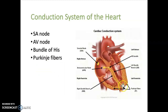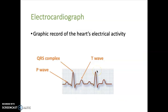The conduction system of the heart involves several structures that set the heart rate and carry the electrical signal from the atria down through the ventricles. Whenever you have an electrical signal, that causes a contraction of the heart. When you look at an electrocardiograph — a graphic record of the heart's electrical activity, seen on an EKG — there are three parts. The P wave represents contraction of the atria. The QRS complex, the sharp spike in the middle, represents contraction of the ventricles. And the T wave represents relaxation of the ventricles.